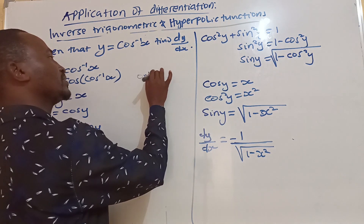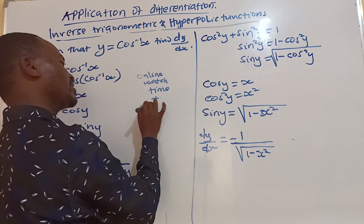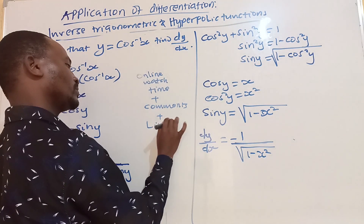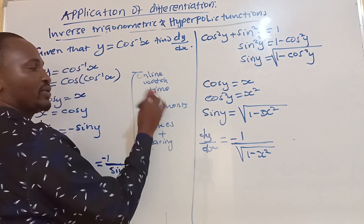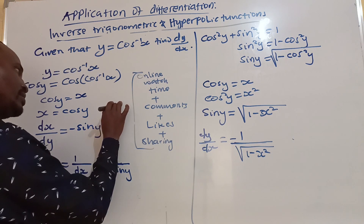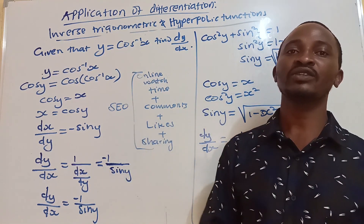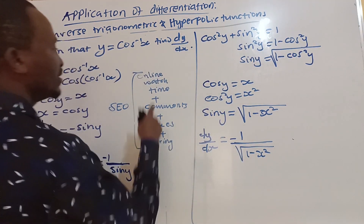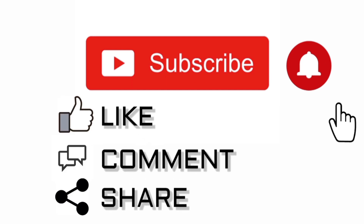Watching videos online, leaving comments, giving likes, and sharing the videos — all these things help with what we call SEO, search engine optimization. They help the video to be suggested to even more people, which makes the channel grow. So if you want to support the channel, you can do so in those ways.